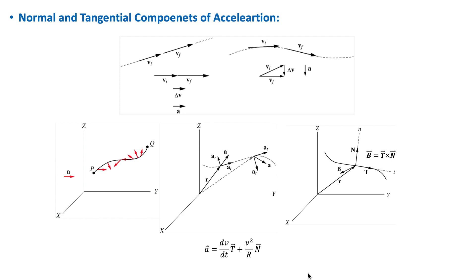For more details about these unit vectors, you may refer to my book, which is in the link in the about section, and the book is available for free. We can write the total acceleration in terms of these unit vectors. You can find the derivation of this expression in my book. Here, this is the tangential acceleration, which is dv over dt, and this is the normal acceleration, v squared over r.